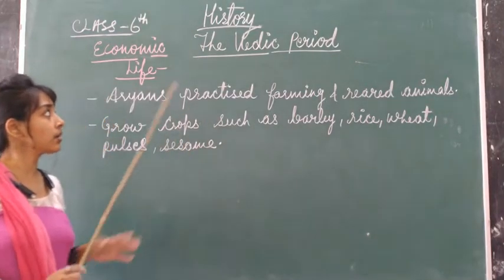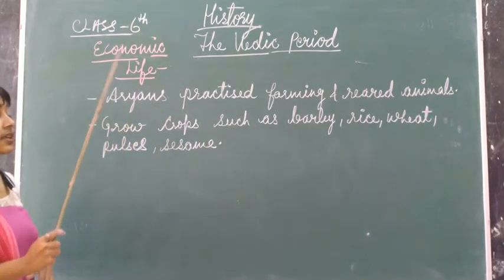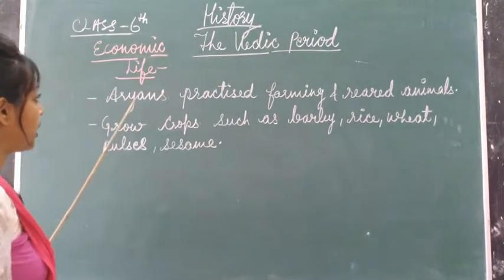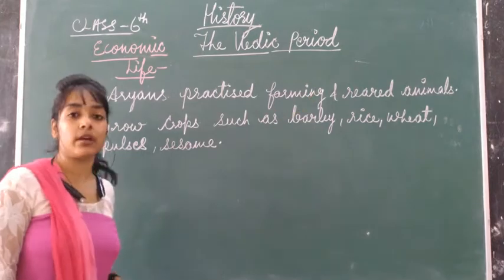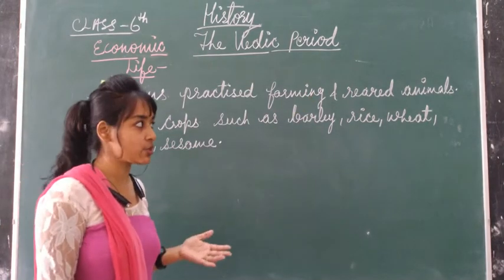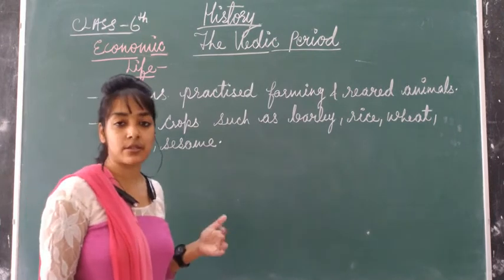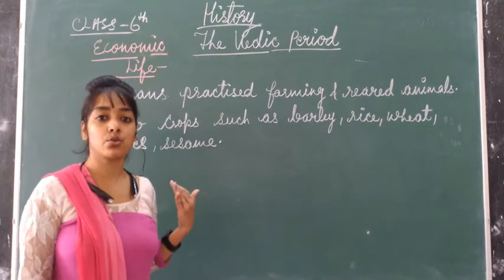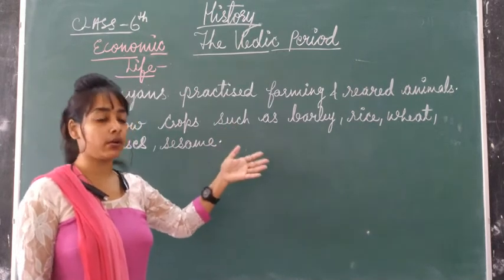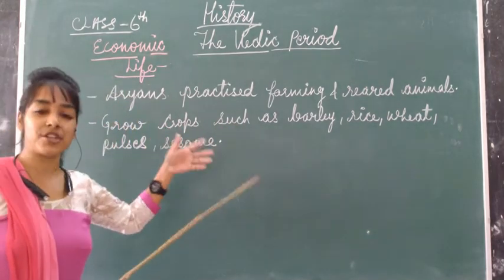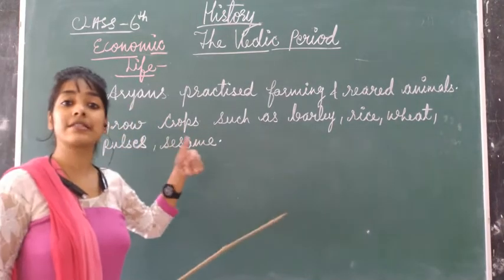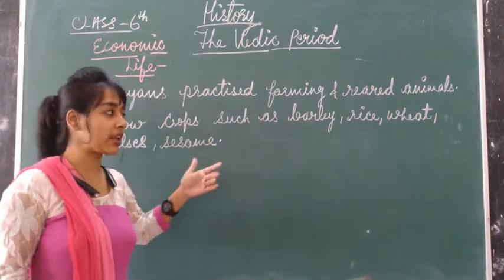Hello class. Continuing with the same topic, today we will take up the economic life of R&A. They practice farming and rearing animals. This is their occupation — farming, culture, and rearing animals. So this is the economic life of R&A, from which they earn their livelihood, and that is what is called the economic life.